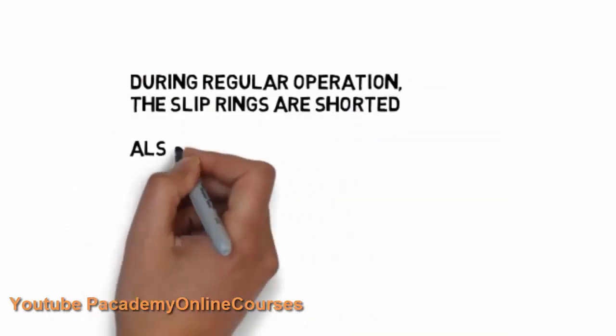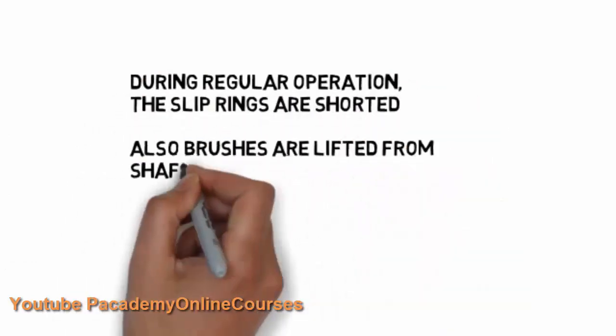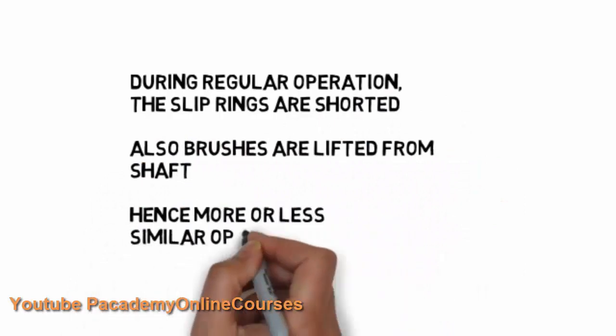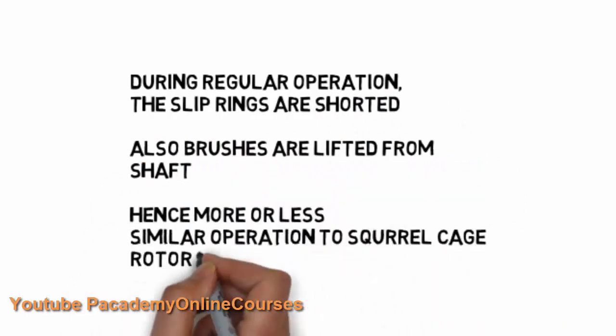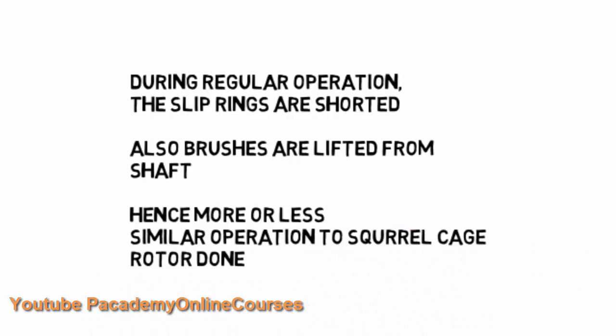During regular operation, the slip rings are shorted and brushes are lifted from the shaft. When shorted, it will act like a squirrel cage with shorted end rings, and more or less similar operation to squirrel cage rotor is possible during running of the motor.